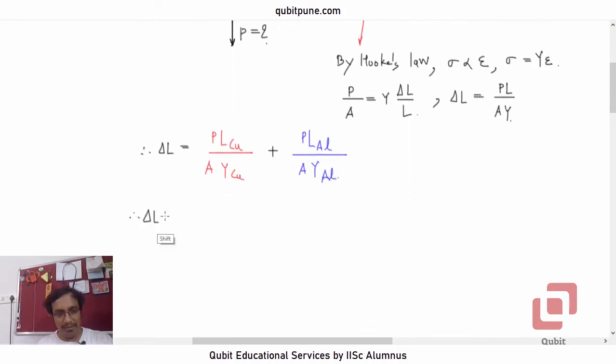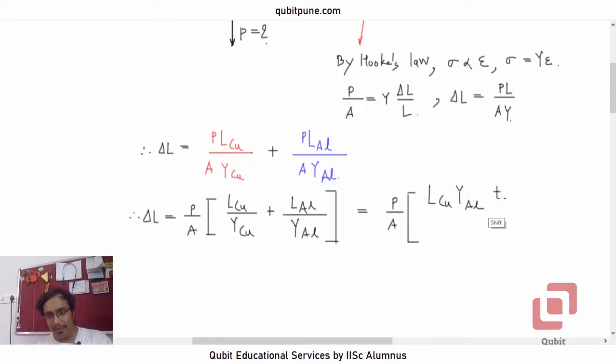So, we can now say that delta L is equal to P by A. Let's take that part common. So, what remains inside will be L_Cu by Y_Cu plus L_Al by Y_Al. Let's now simplify this: P by A as it is into bracket L_Cu Y_Al cross-multiplying plus L_Al into Y_Cu upon Y_Cu into Y_Al.